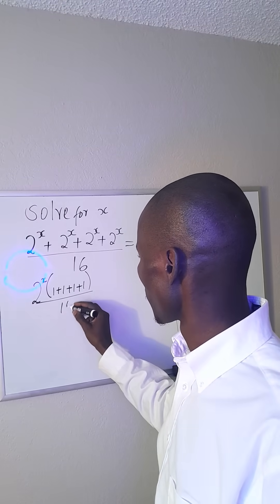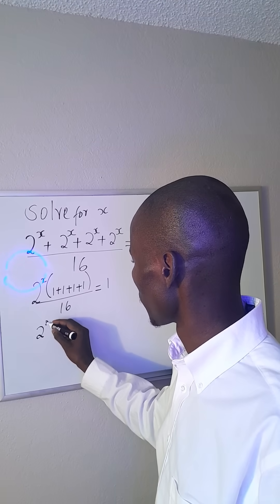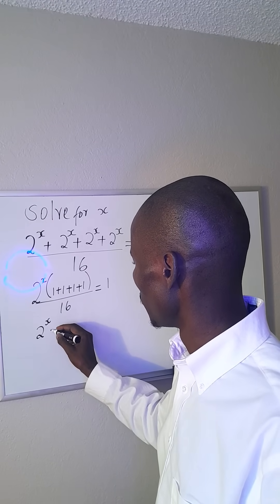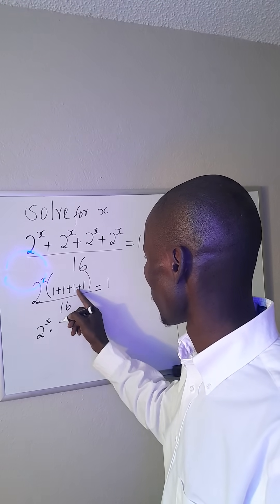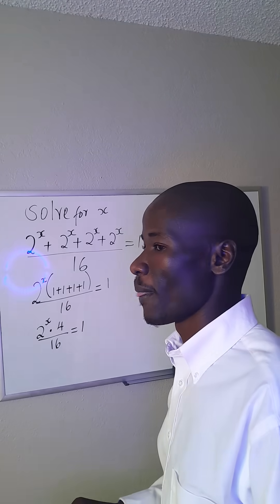When I add this, I'll get 2^x. 1 plus 1 plus 1 plus 1 is 4, everything out of 16 is equal to 1. Because I'm multiplying here, this can go here, so we have 2^x times 4 out of 16 equals 1.